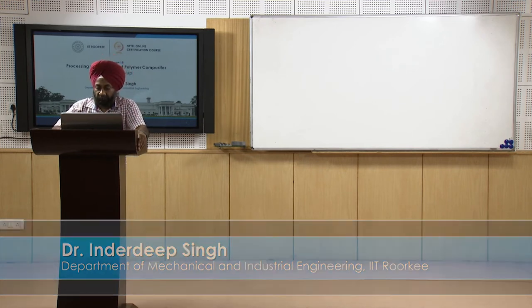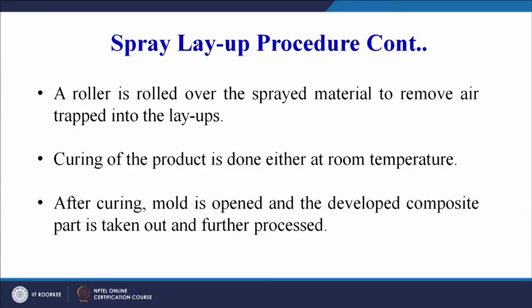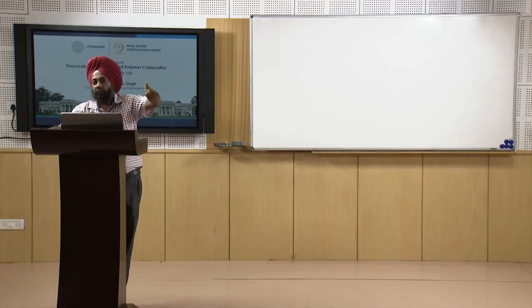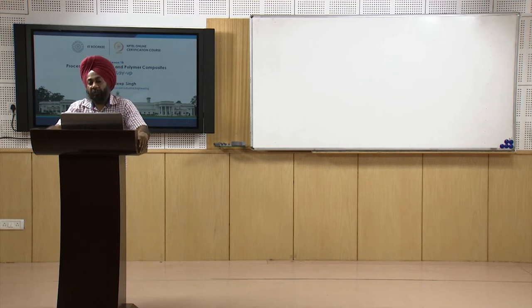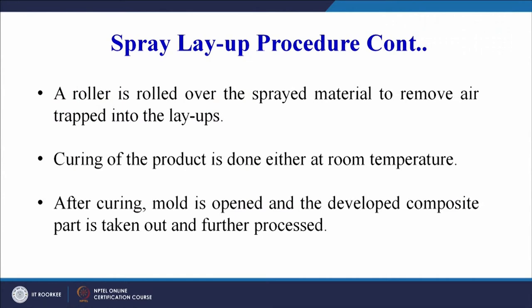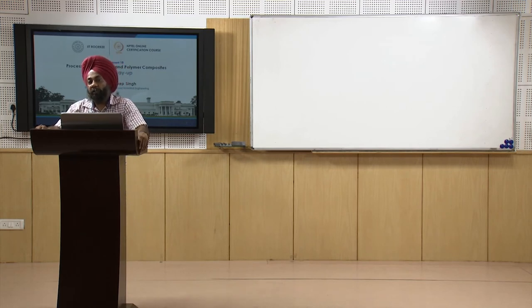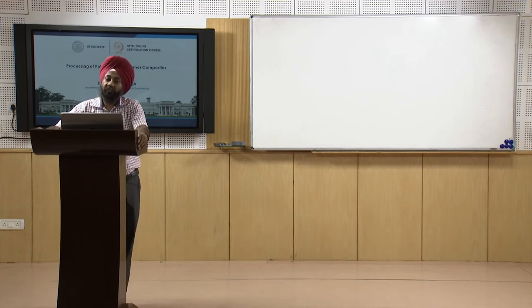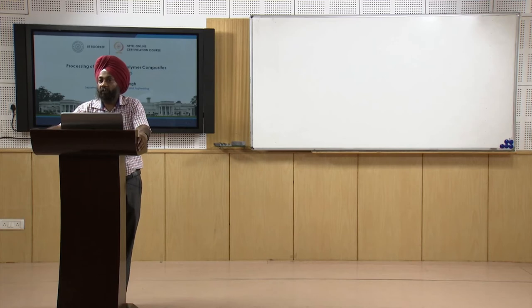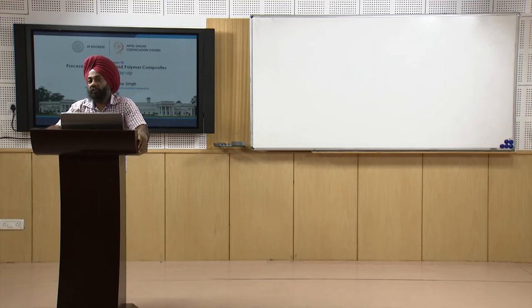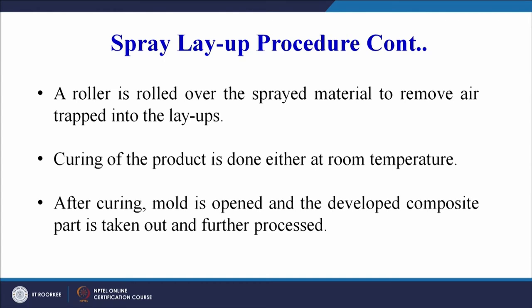The fibers used in spray layup will be short fibers only. A roller is then rolled over the sprayed material to remove air trapped in the layups. As mentioned for hand layup, there is a tendency for air bubbles or voids to form during processing, leading to poor quality products. Rollers help remove this air entrapment to achieve good quality.